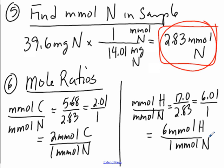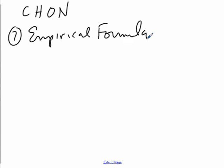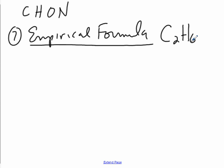Looking at those results — 2 millimoles carbon for 1 millimole nitrogen, and 6 hydrogens for 1 nitrogen — we can now write the empirical formula of the compound. That's usually done in the order carbon, hydrogen, then whatever else. We just have nitrogen, so we write CHN. The empirical formula is C2H6N.